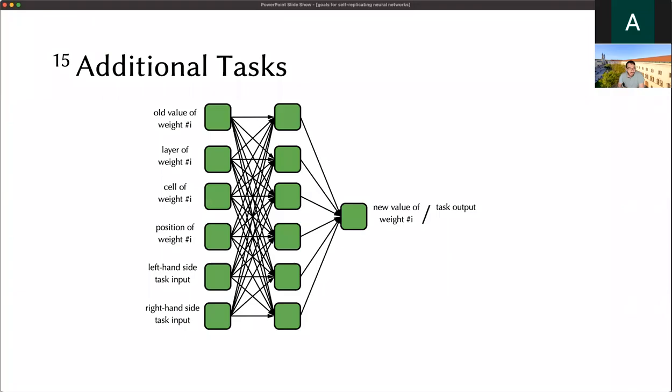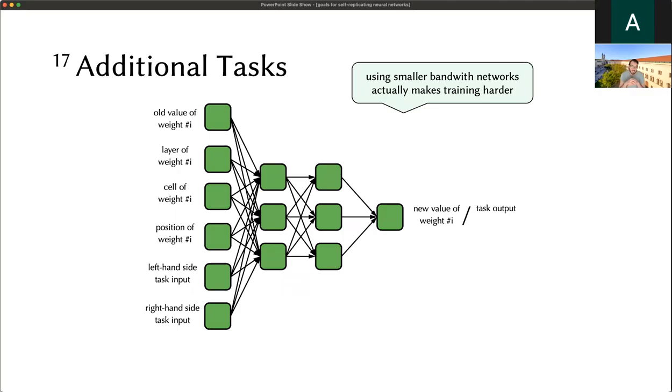What we are introducing today is extending the network we previously had. We now have six inputs instead of four. What we extend the network with are these two inputs to the bottom here, and we call them task input. We give this network, in addition to the self-replicating setup, an additional task that might be anything. For our example, it's usually addition. We give it two numbers and expect the network to return the sum of these two numbers, a very simple task. We altered the network structure a little bit to introduce some more layers, have it be a bit deeper, and reduce the bandwidth to make training harder again.